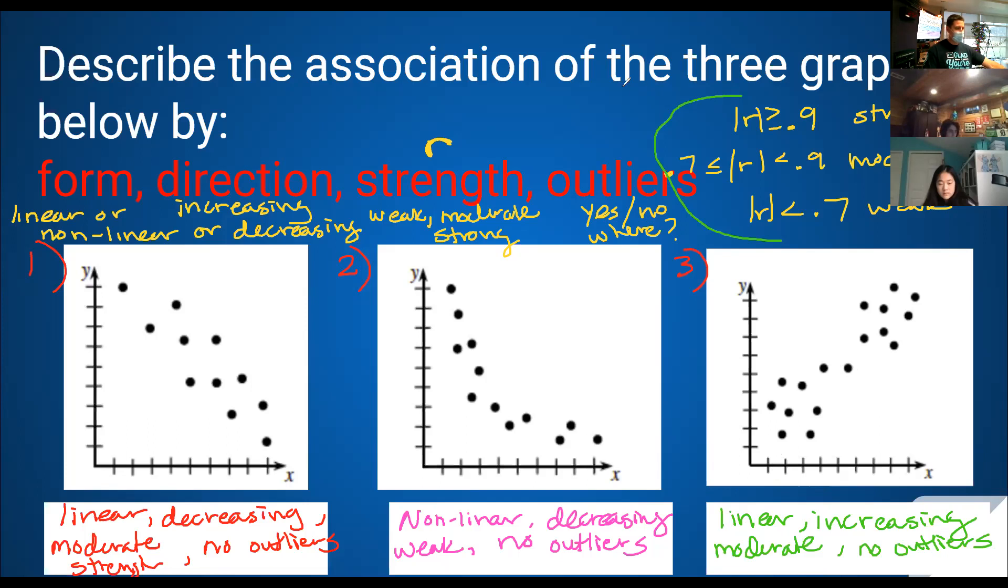Are there any questions before we do that? So the strength scale is to essentially describe how much of a line that you are in. So automatically, if your shape of your graph is not a line or anything like it, if it's curved, it's automatically going to be weak. Because your correlation coefficient, your R value, would be something very small because it's not in a line. And it's meant to describe a line. For number two, something probably 0.5 or below. Yeah.